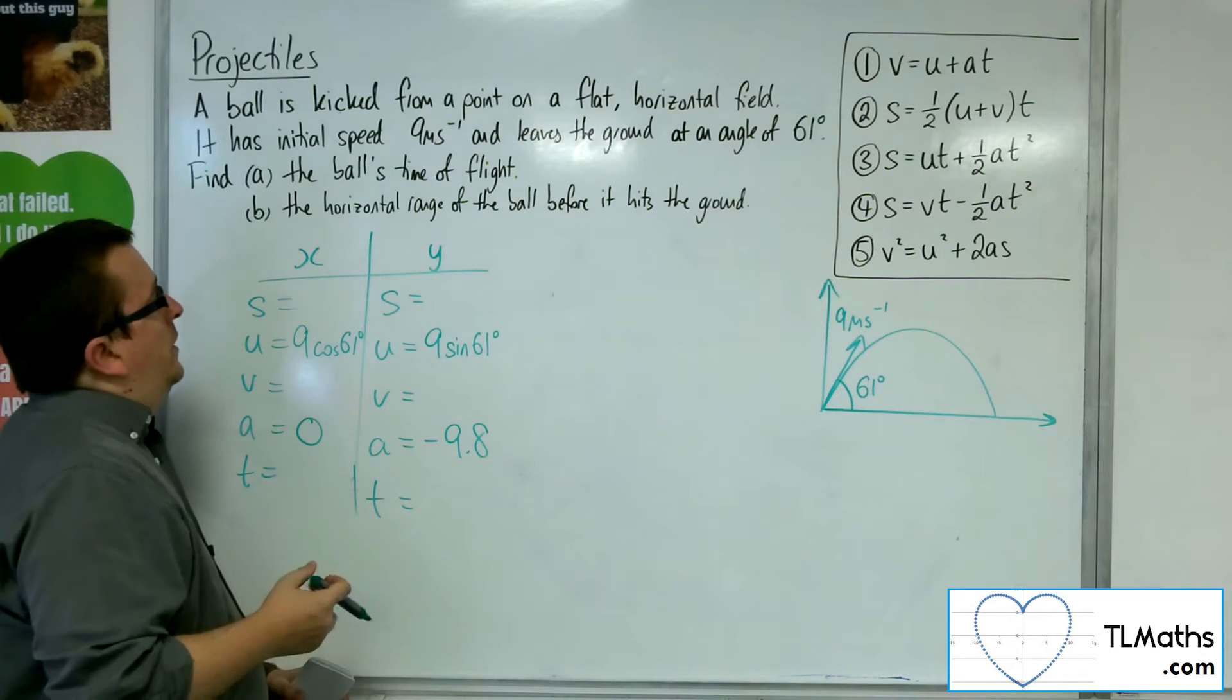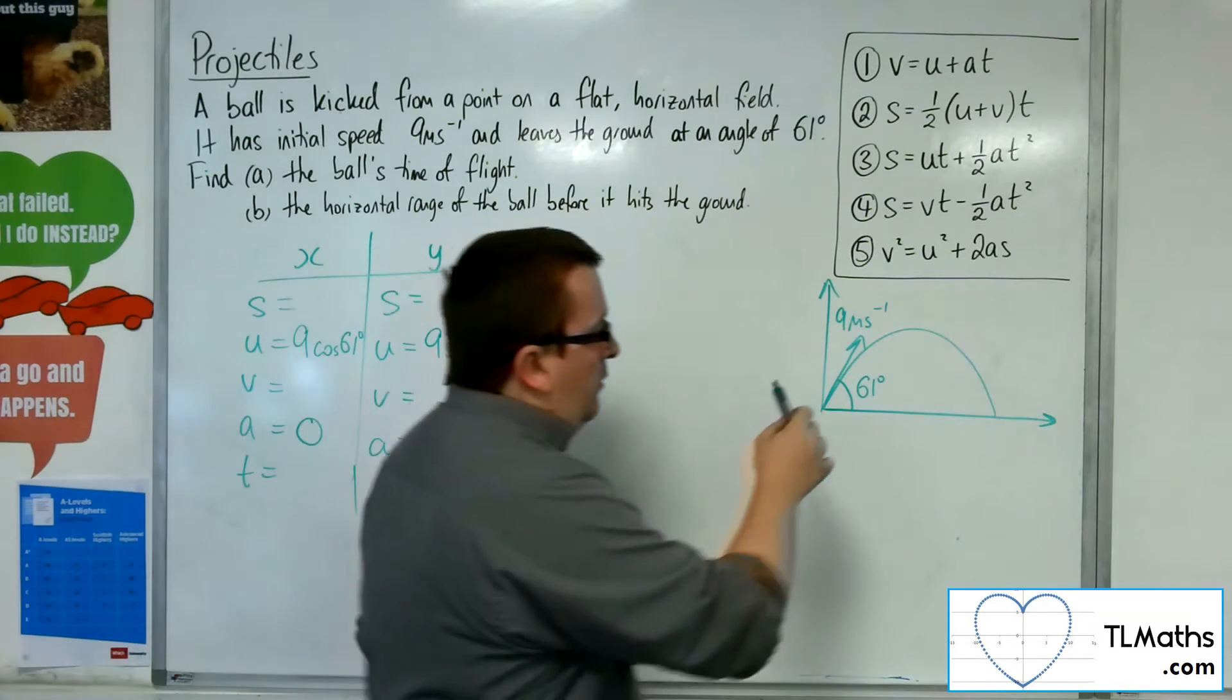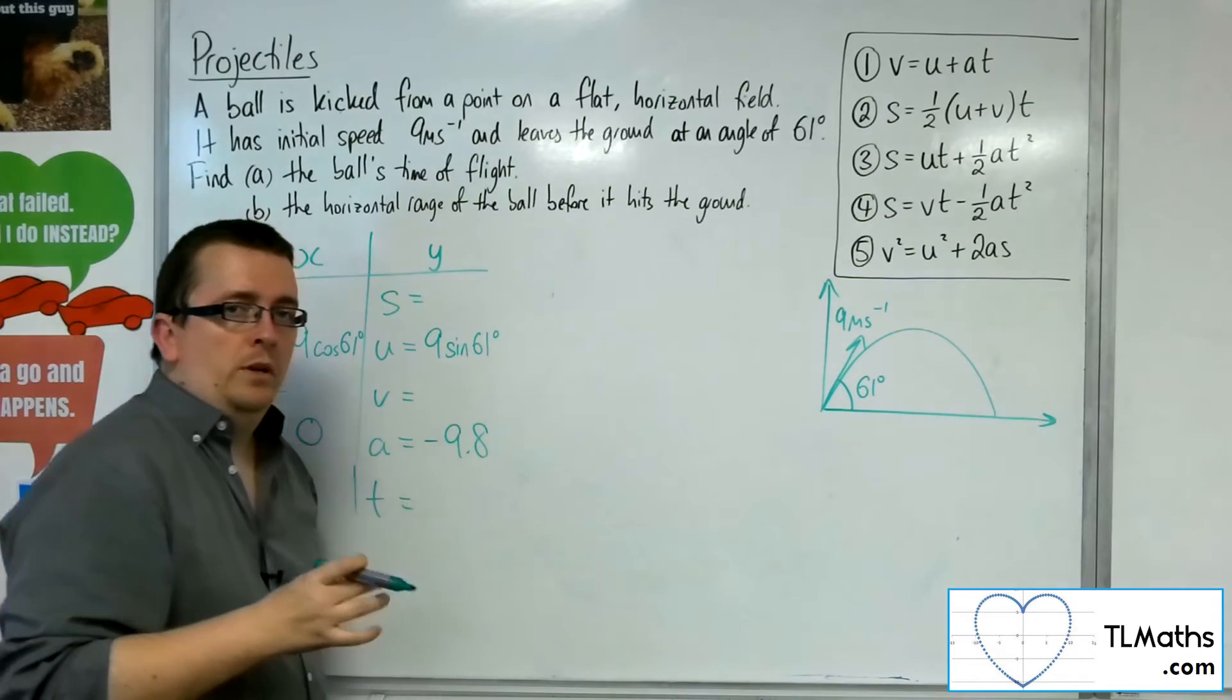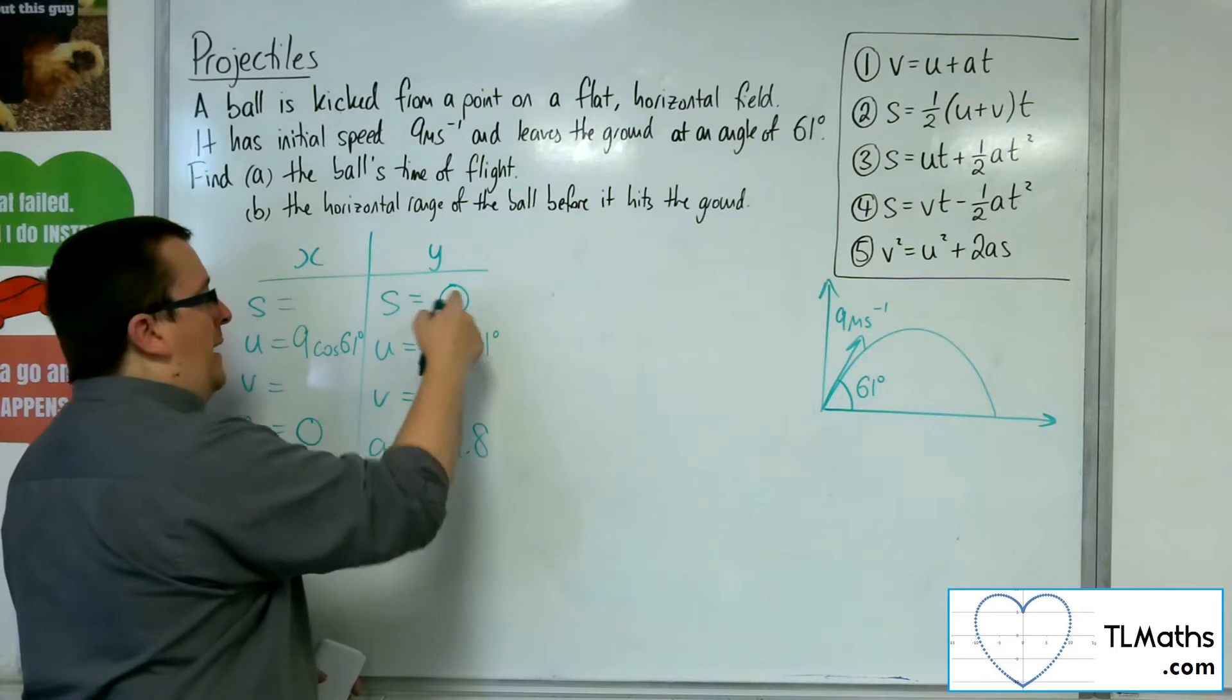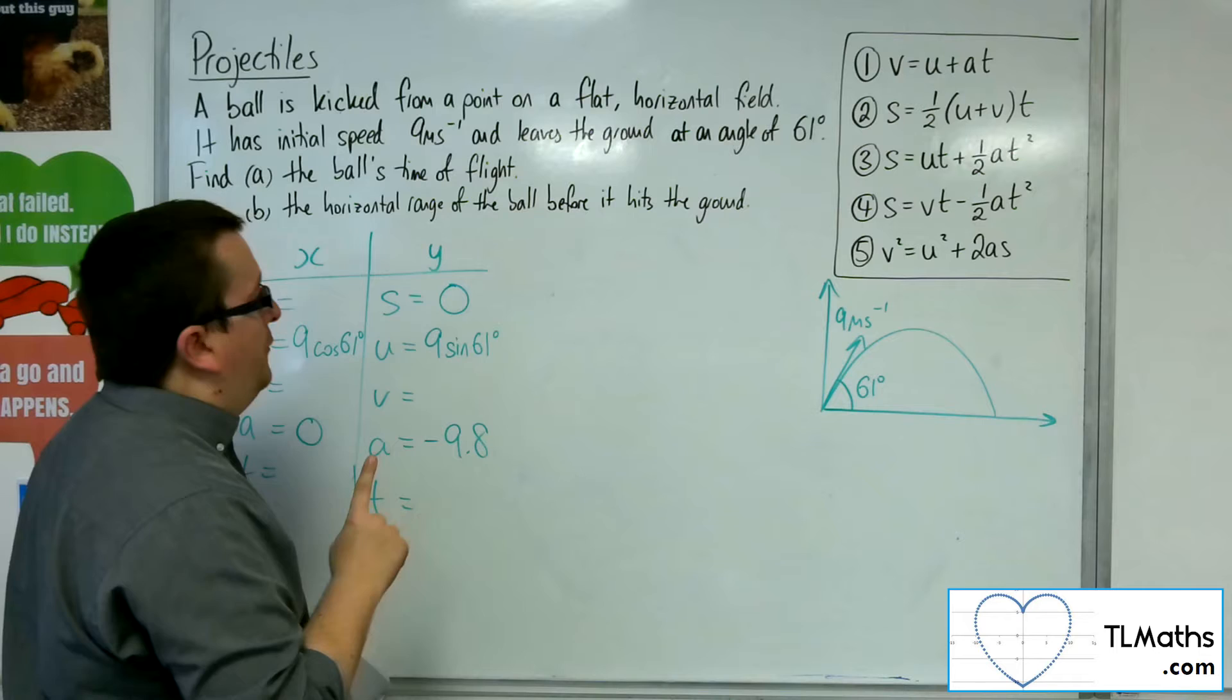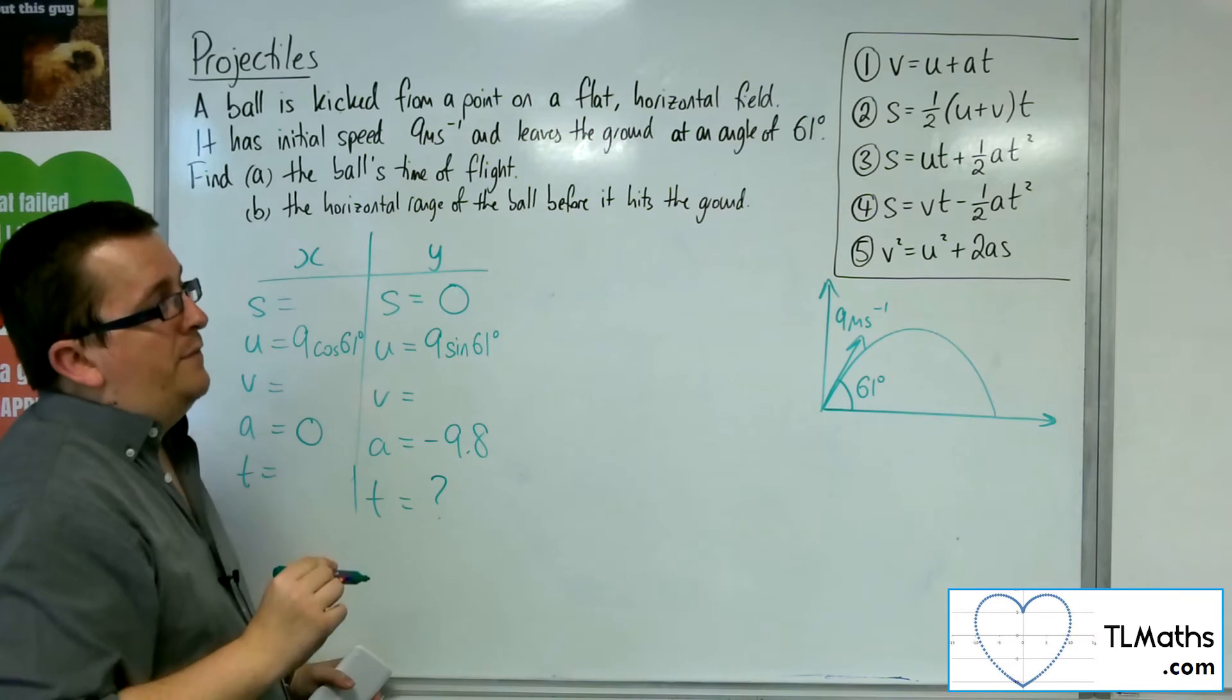So I want to find the ball's time of flight. Now the ball will fly through the air and hit the ground, and that's when its vertical displacement will be 0. So I'm looking at this bit here when the ball hits the ground. So I want to find the time. So I want the equation that doesn't have the V in it.